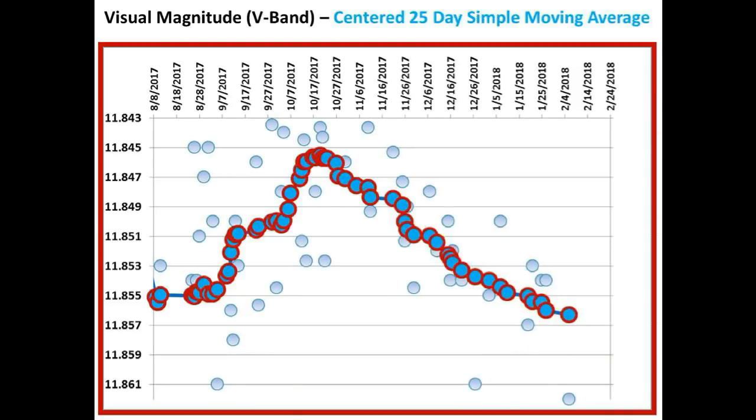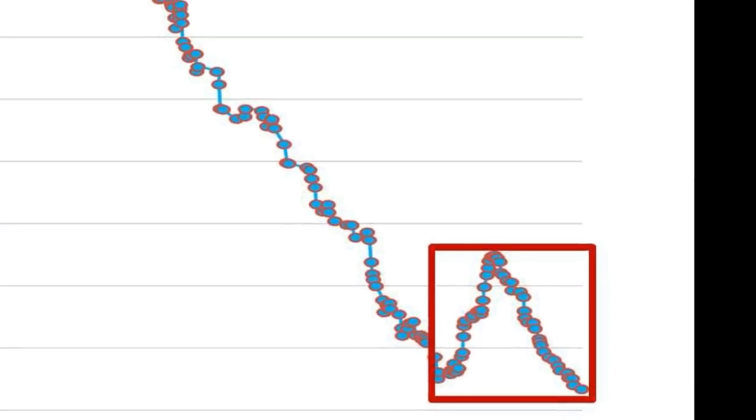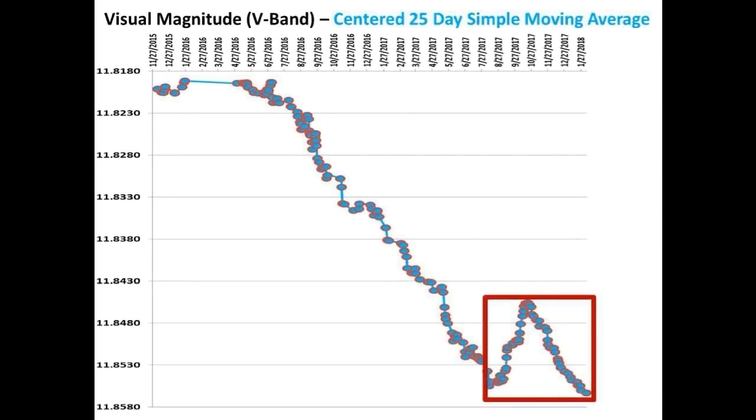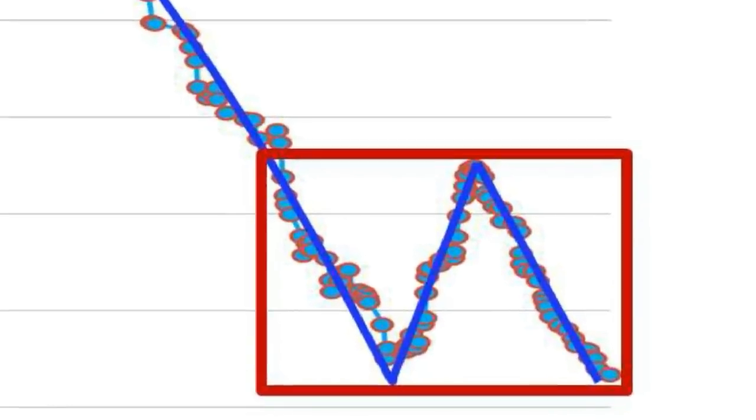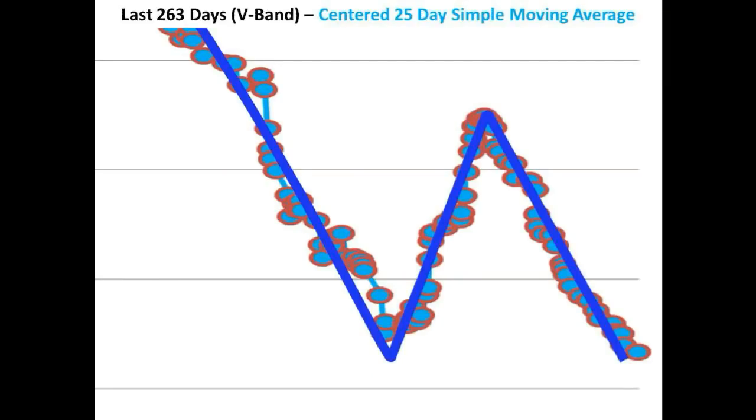So let's go ahead and zoom back out with this new data point incorporated so you can see the entire light curve. And we will now take a closer look at what happened over the last 263 days. So let's go ahead and add in the best fit curve for the entire time period of this light curve. And let's now zoom in to this portion of the light curve and look at some interesting observations.